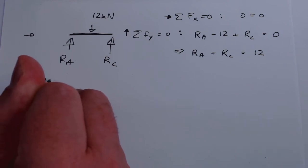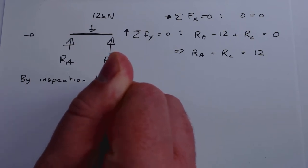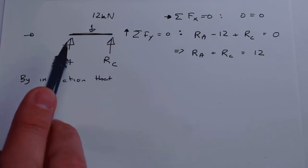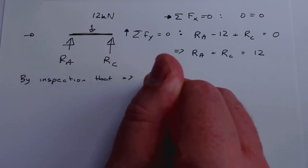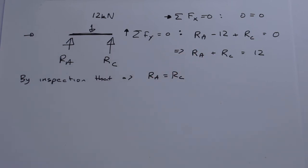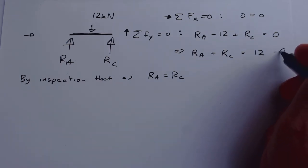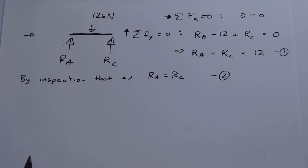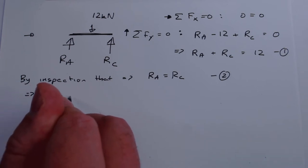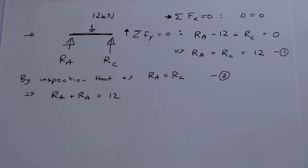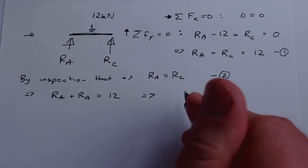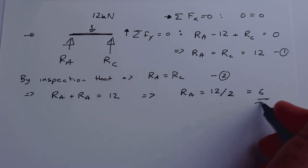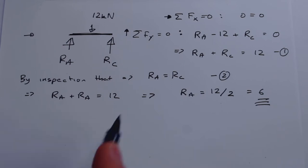This is such a simple problem I can say by inspection that the reaction forces RA and RC must be the same, since the 12 kN load is bang in the middle. Let's treat that as equation two: RC equals RA. Substituting in, RA plus RA equals 12, therefore RA equals 12 divided by 2, which is 6.